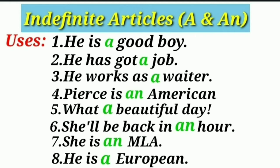An is used before a silent H. An is also used before a word that begins with a consonant but has a vowel sound, for example MLA. And A is used before a word that begins with a vowel but has a consonant sound — for example: he is a European. An is used before singular countable nouns which begin with a vowel sound and performs the same function as A.